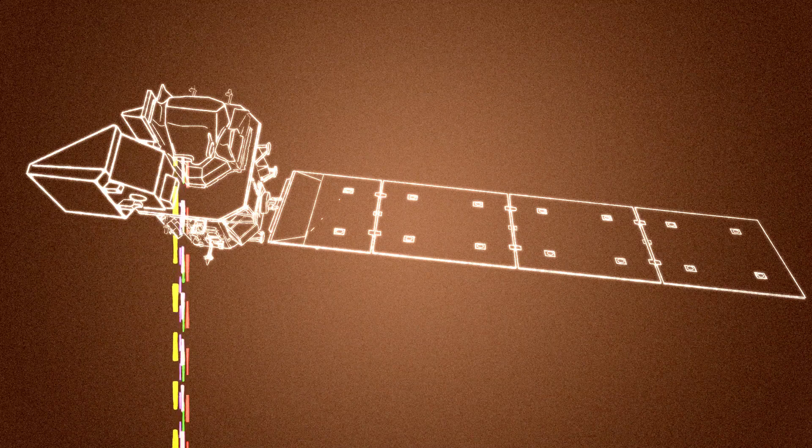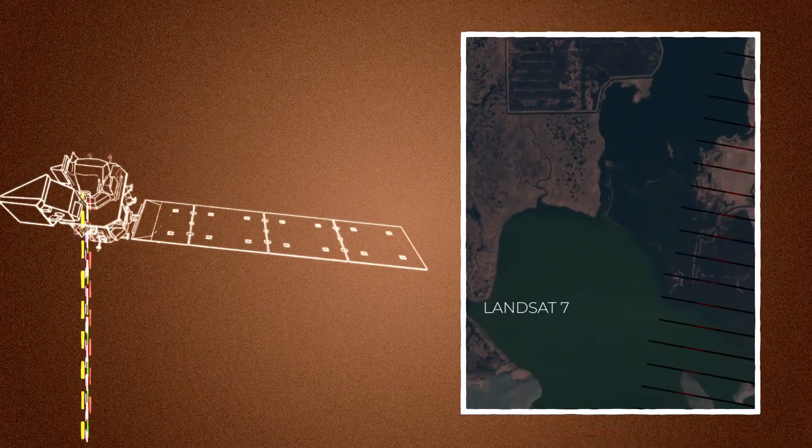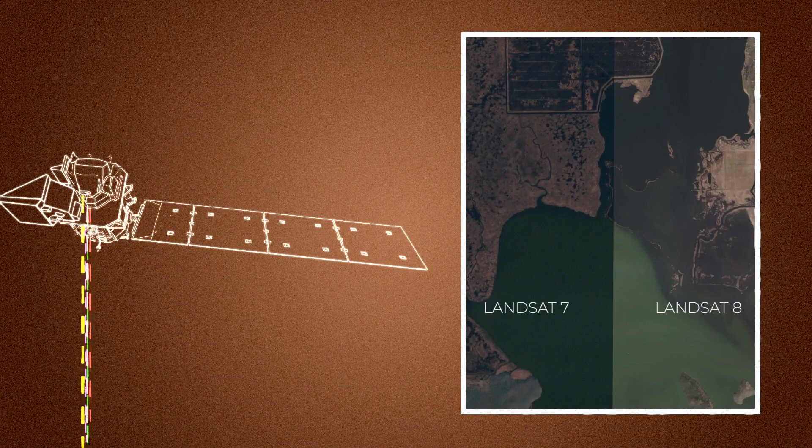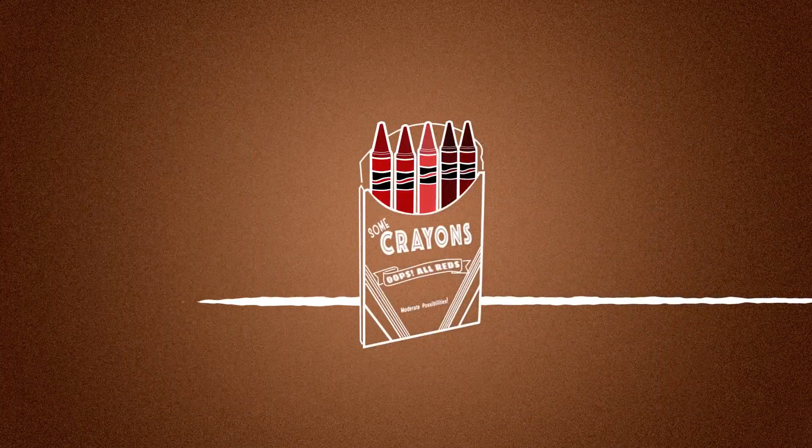Landsat collects light. How intense that light is tells us about what's on the ground. You can think of intensity like shades of a different color.